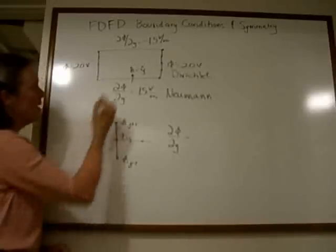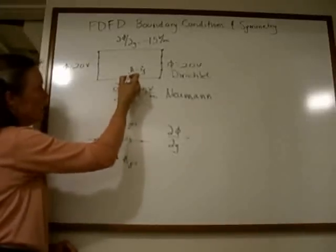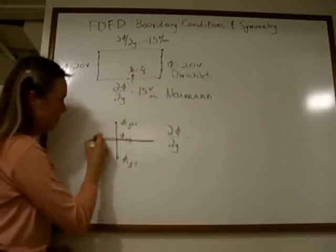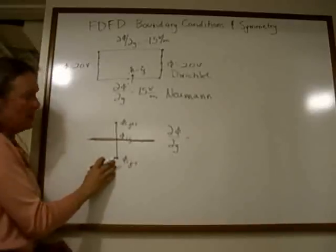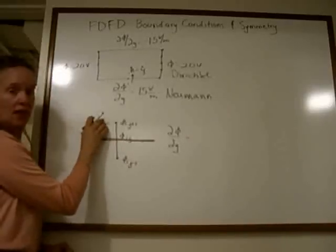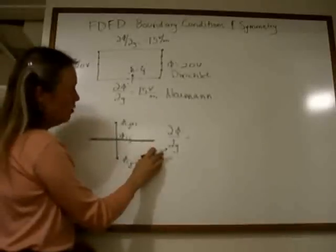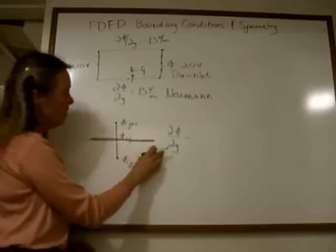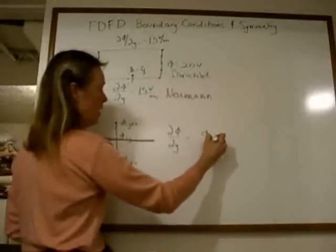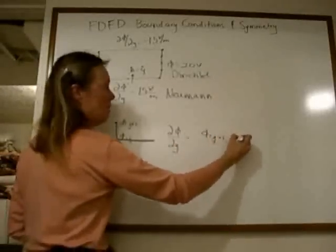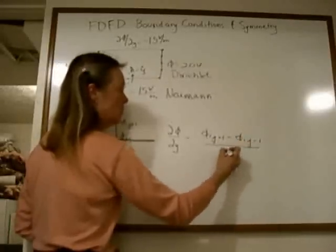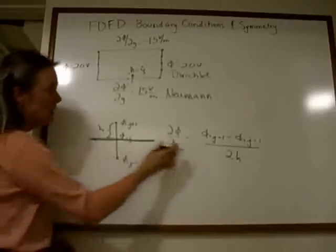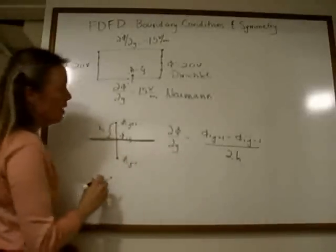Here's a picture of one of the cells at the boundary. This point is phi(i,j), right on the boundary. Below it is phi(i,j-1) and above it is phi(i,j+1). If we want to write the derivative of the potential with respect to y, it would be phi(i,j+1) minus phi(i,j-1) divided by the distance 2h between the points. We've done these numerical derivatives in the past.